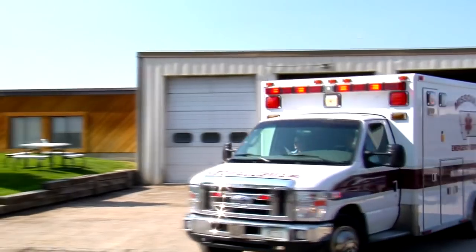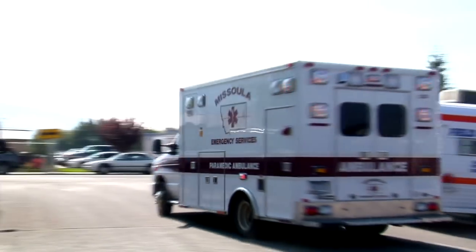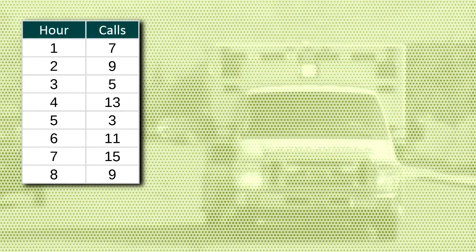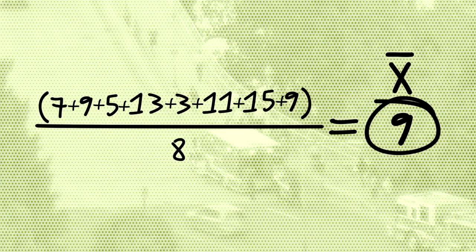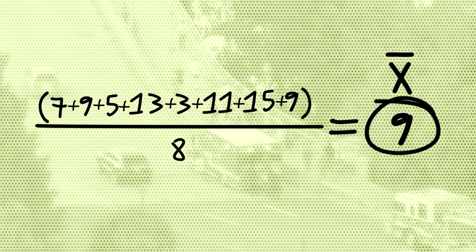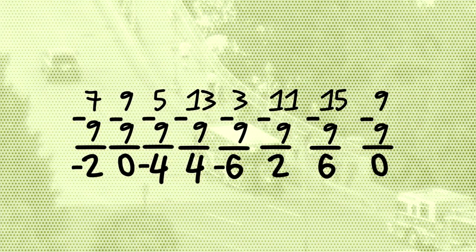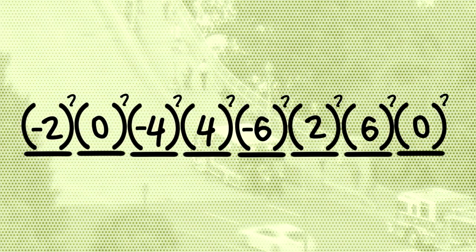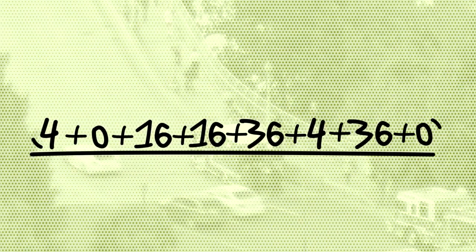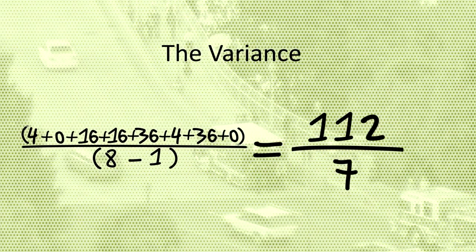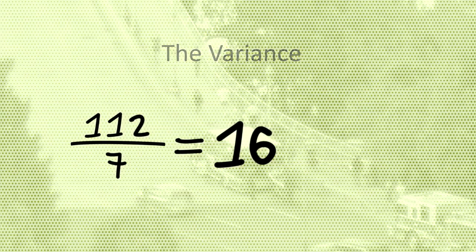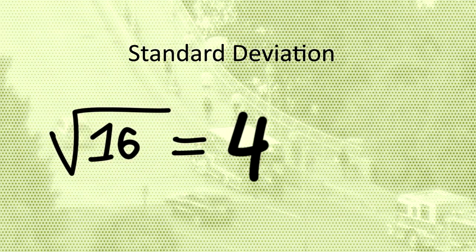Emergency medical services companies want to estimate how many ambulance crews to keep on standby. Given the number of ambulance calls over an eight-hour period, to find the standard deviation: first find the mean; next find the deviations from the mean by subtracting the mean from each observation; then square each deviation; then average the squared deviations by summing and dividing by n−1 — this is called the variance. The standard deviation is the square root of the variance.